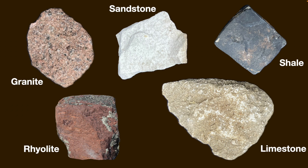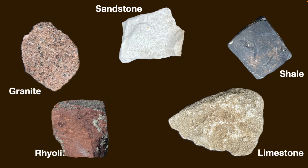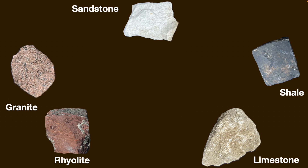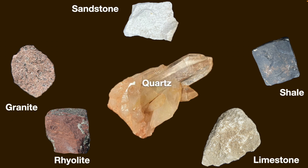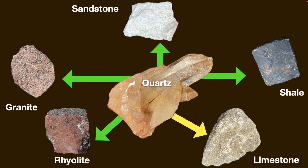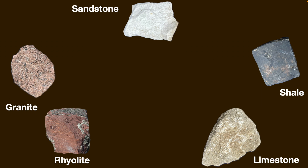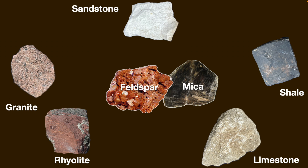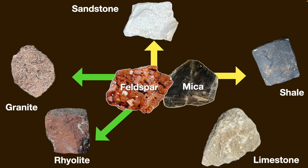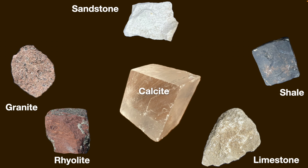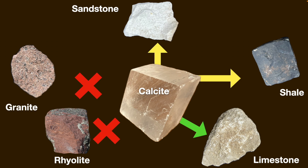Now consider the geological equivalent. There are similar expectations about what minerals should or might occur in certain rock types. Quartz is kind of like deer — it's common in a wide variety of rocks and can be present almost anywhere, especially in the Ozarks. Feldspar and mica are a little more restricted, expected in granite and rhyolite, possible in sandstone and shale, but very unlikely in limestone. Whereas calcite, the key component of limestone, could be a minor presence in sandstone or shale, but it's about as common in granite or rhyolite as a starfish in an Ozark forest.